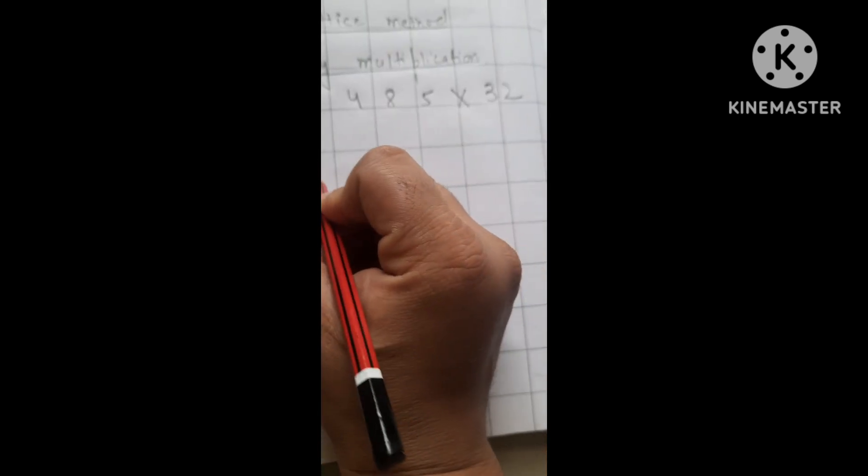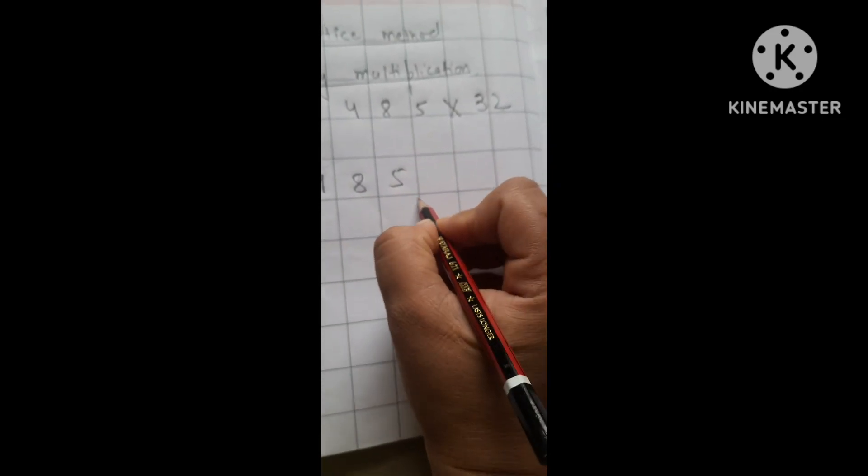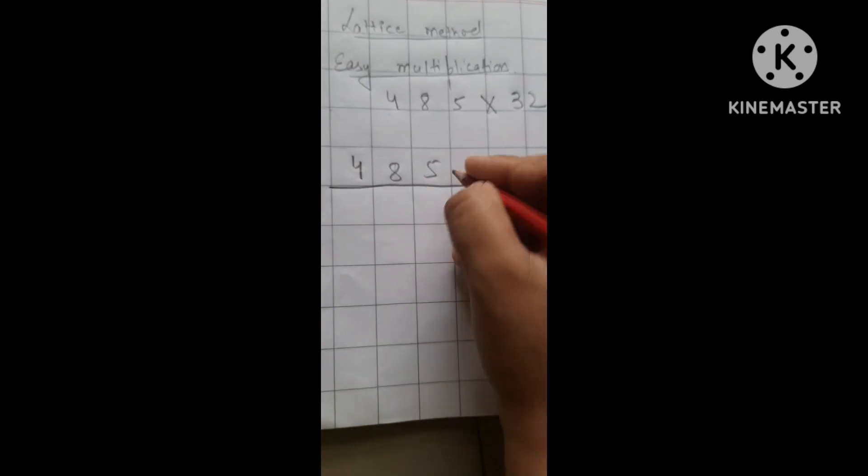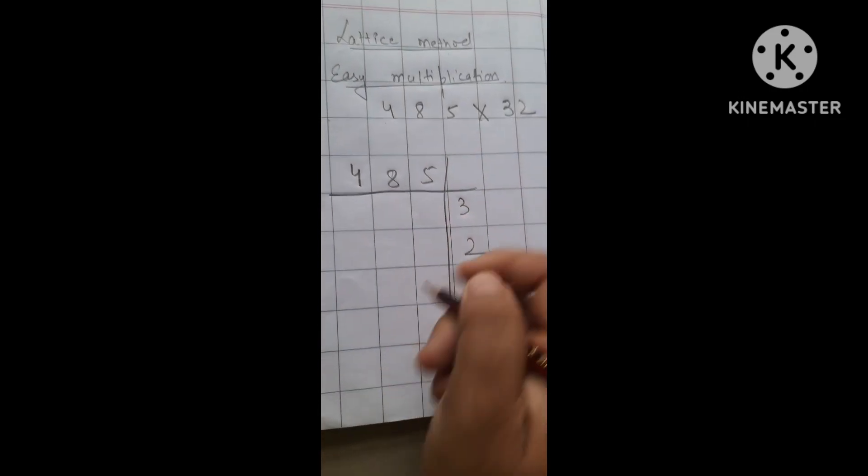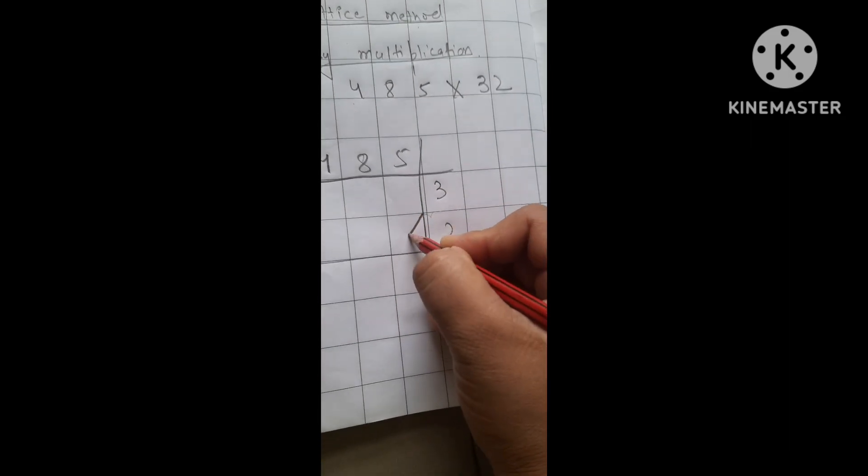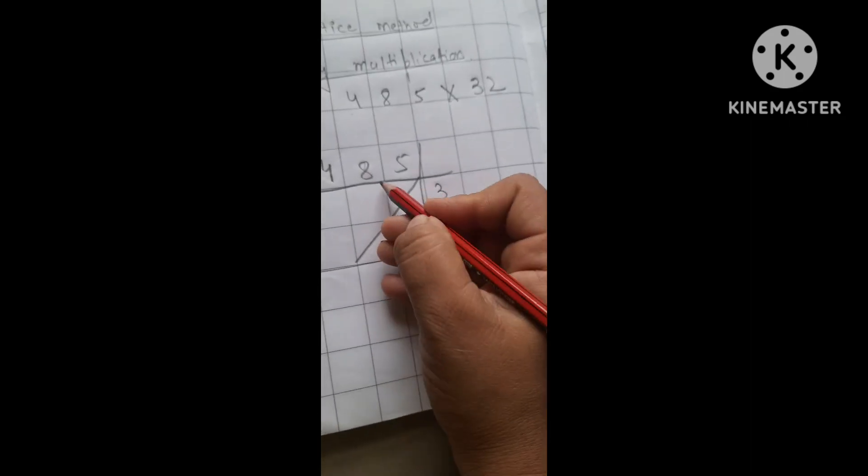So for that, firstly we will make a lattice. We will make columns and write the digits: 485 we will write above and 32 we will write below. Then we will start multiplying. We will divide each column in a diagonal. Like this, as I am doing, the same way you will divide.